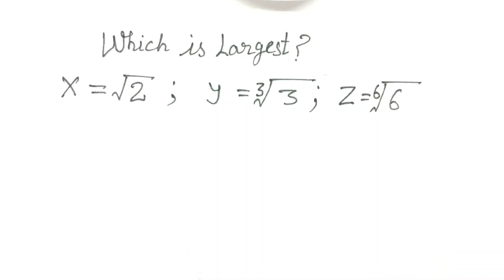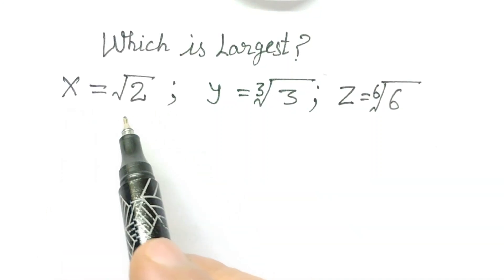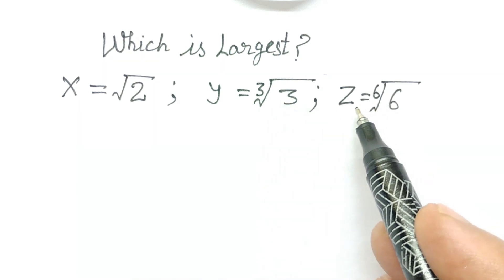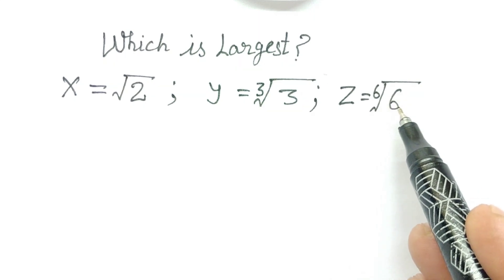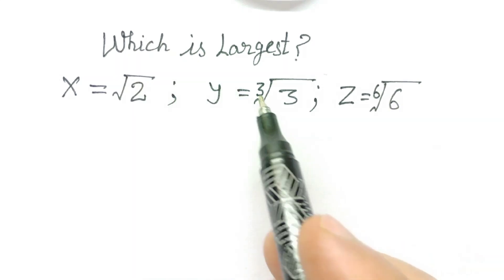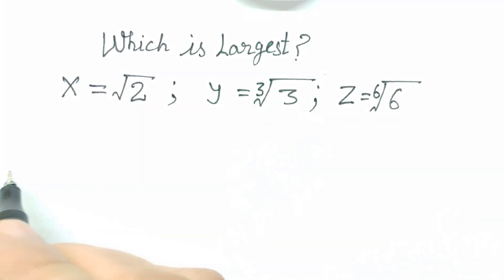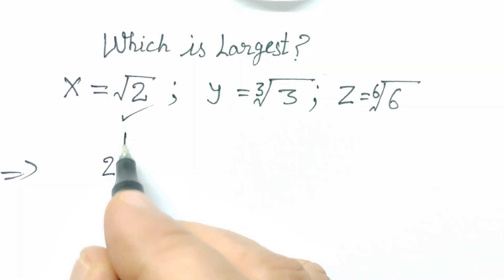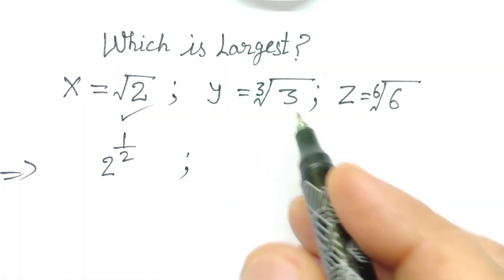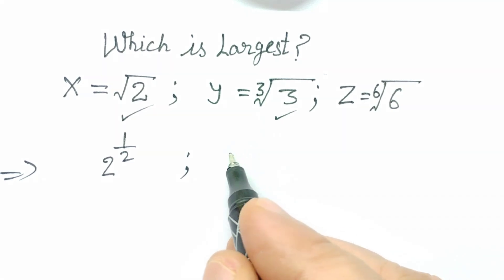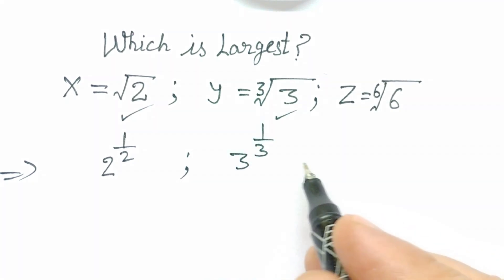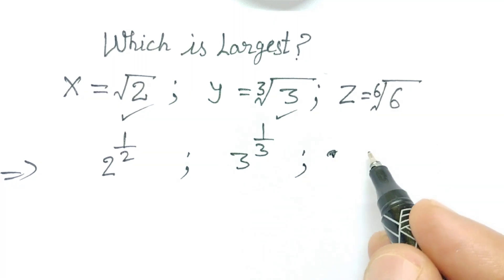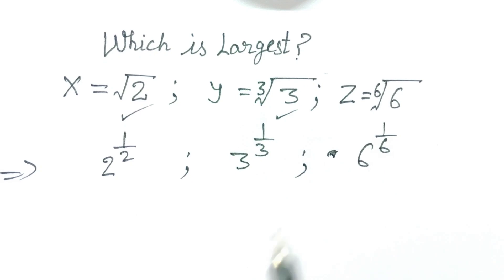Hi friends, welcome to my channel. We have x is equal to square root of 2, y is equal to cube root of 3, and z is equal to sixth root of 6. We have to find out which is largest. So let's start. Square root of 2 can be written as 2 to the power half, cube root of 3 as 3 to the power 1 by 3, and z can be written as 6 to the power 1 by 6.